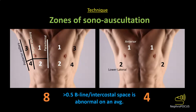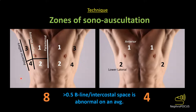It may not always be possible to perform a 28-zone lung ultrasound. Abbreviated techniques have been described primarily in the context of heart failure, and the 8-zone lung ultrasound method has recently been shown to retain prognostic significance compared to the 28-zone method in dialysis patients. The 8-zone method divides each chest into two anterior and two lateral zones using the parasternal, anterior axillary, and posterior axillary lines, with a horizontal line at the nipple level. A further abbreviated 4-zone protocol uses just one anterior zone and one lower lateral zone — zones one and four of the 8-zone method.